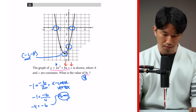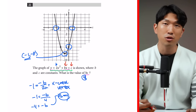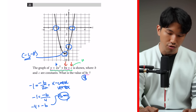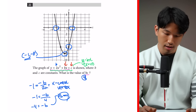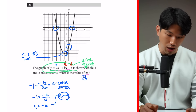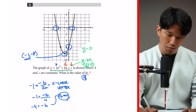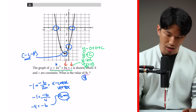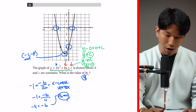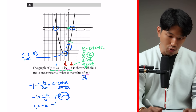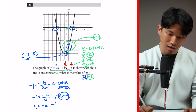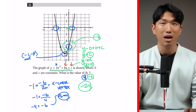Now let's find C. In a parabola equation, the constant term without any X refers to the Y-intercept — the value of Y when X equals 0. When you plug in X equals 0, you get Y equals C. From the graph, when X is 0, the Y-intercept is negative 6, so C equals negative 6. Therefore B times C is 4 times negative 6, which equals negative 24. That's our final answer.